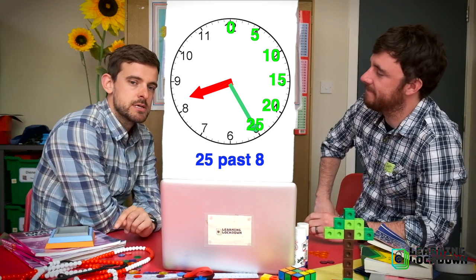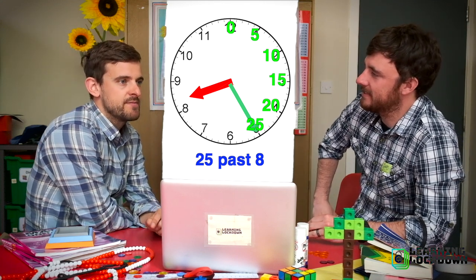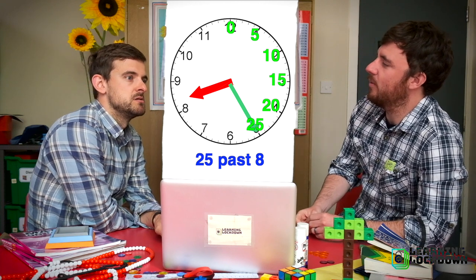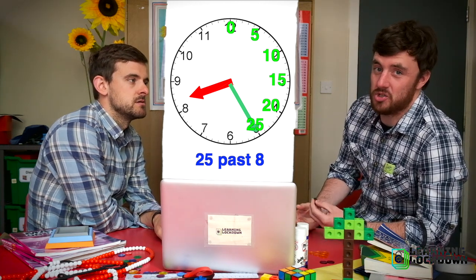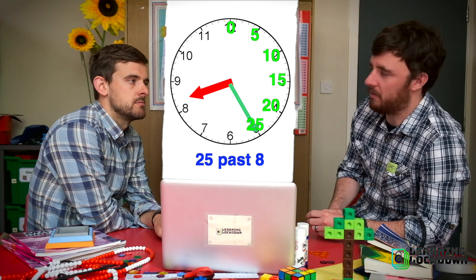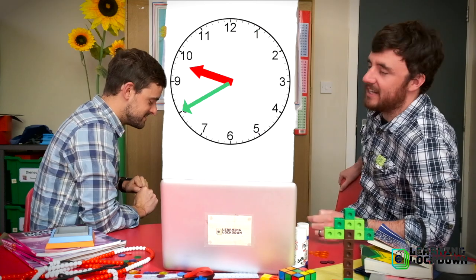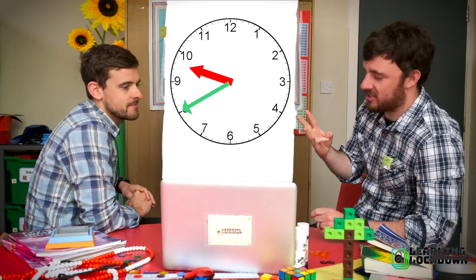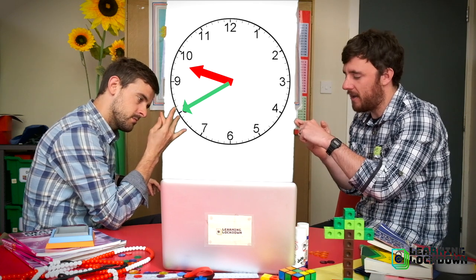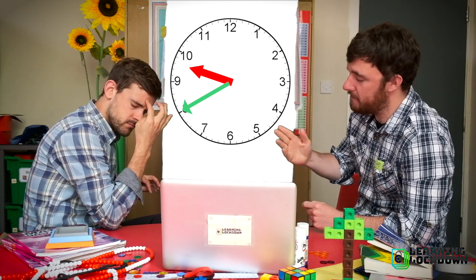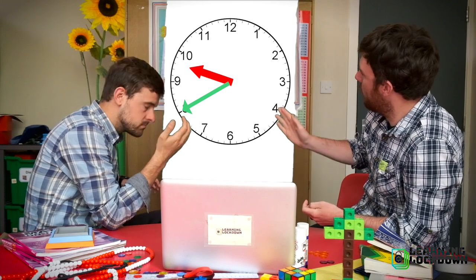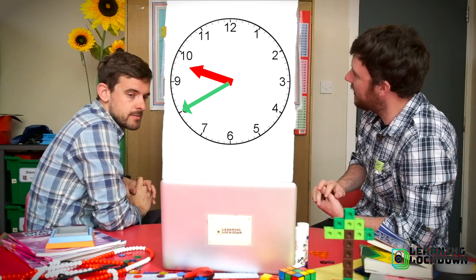This is where they can get a little bit tricky. Let's take a look at this one. Tell the time. There are three things you've got to say: a number, to or past, and then another number. So we have to figure out three things. The middle one, to or past, is the easiest. Which half of the clock's are on? This side, so it's to. So it's something to something.